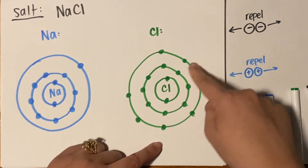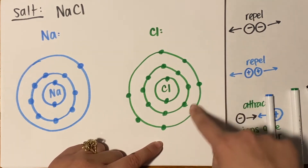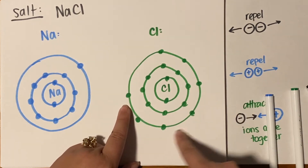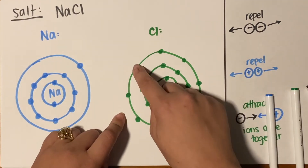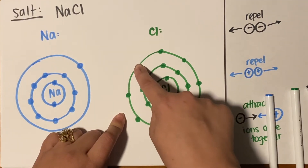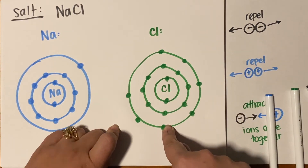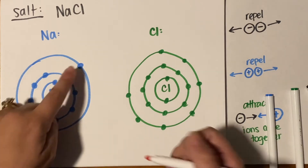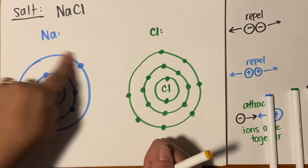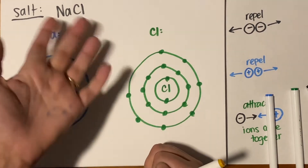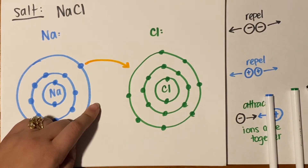Chlorine has two electrons in its first shell, eight in its second, but only seven in its third. Chlorine desperately needs just one more electron to get a full valence shell. So what's going to happen is sodium is going to give its valence electron to chlorine. Chlorine is going to accept that electron — a full transfer of electrons.